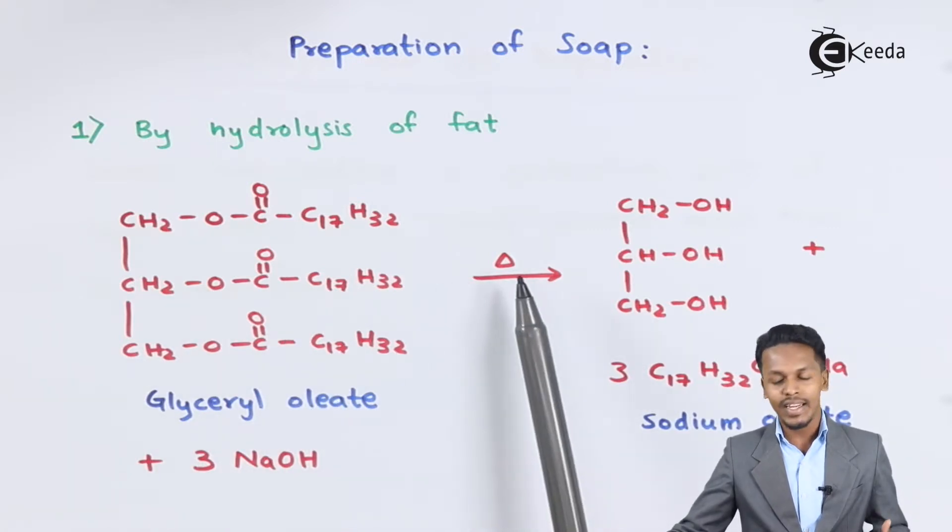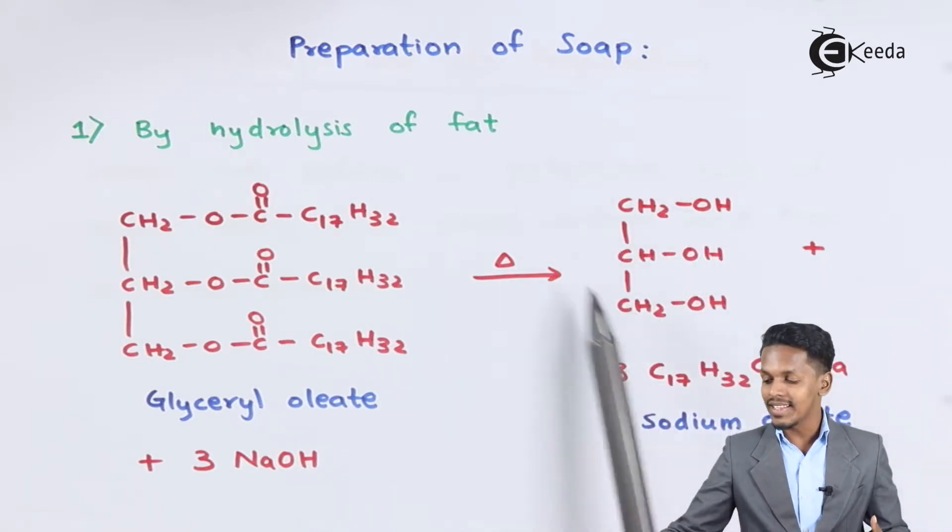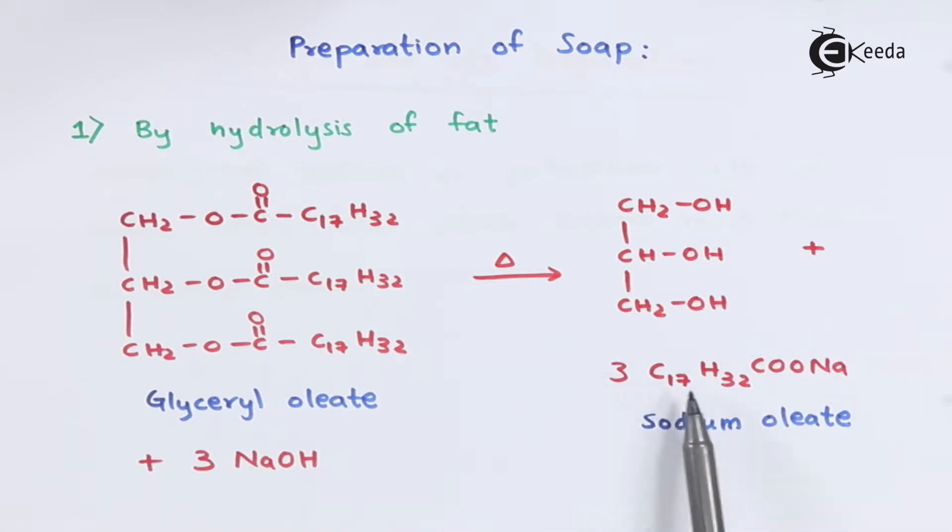We get CH2 with polyhydroxy groups, which is glycerol, along with three moles of C17H32COONa, known as sodium oleate. Sodium oleate is the soap.